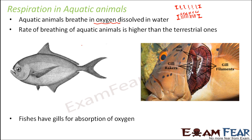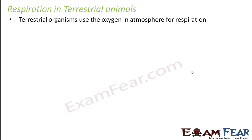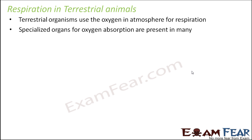Every animal has a different lifestyle. Fishes live in water so they need a mechanism to take in oxygen dissolved in water, whereas terrestrial animals need specialized organs to absorb oxygen present in air. Terrestrial organisms use the oxygen in the atmosphere for respiration. Now, do all terrestrial animals have specialized organs to absorb oxygen? Specialized organs for oxygen absorption are present in many but not all. For some animals, their body surface or skin acts as the organ for oxygen absorption — they do not have any special organ for this purpose.